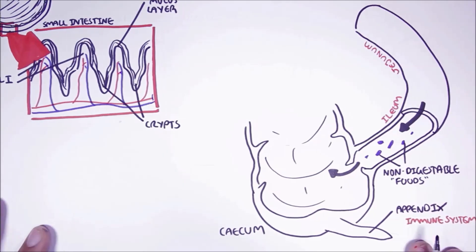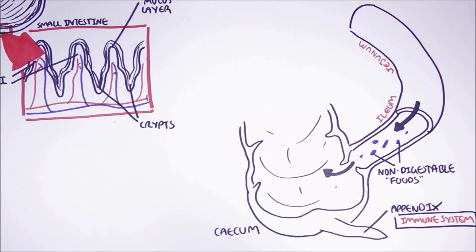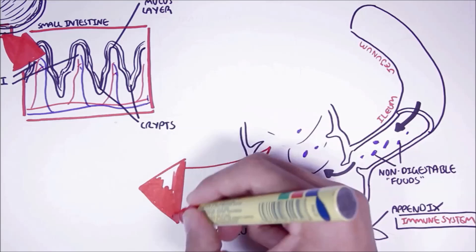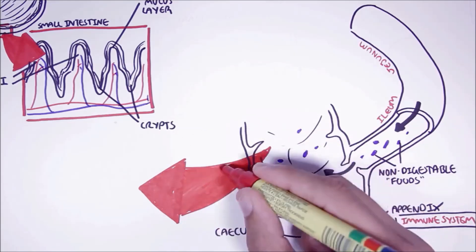What most people may not know about the large intestine, in particular the proximal area of the large intestine, the cecum, is that a lot of these non-digested foods undergo fermentation by the trillions of bacteria that live here. Let's have a look at what happens.